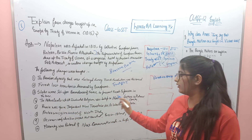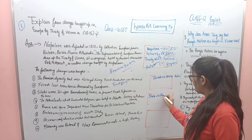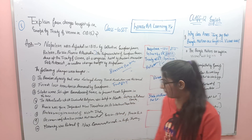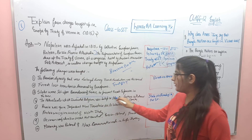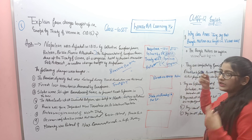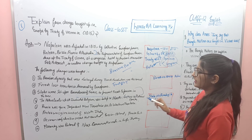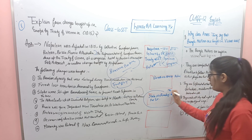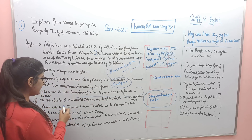Next: 'States were set up on the boundaries of France to prevent French expansion in future.' Keyword: 'States on boundary to prevent X.' States on boundary to prevent expansion — third point yaad ho gaya. So teen points learn ho chuke hain: Napoleon 1815 mein haara four countries se, BPRA treaty bani in Austrian congress by Duke Metternich, first Bourbon restored, second French territories lost, third states on boundaries to prevent expansion.